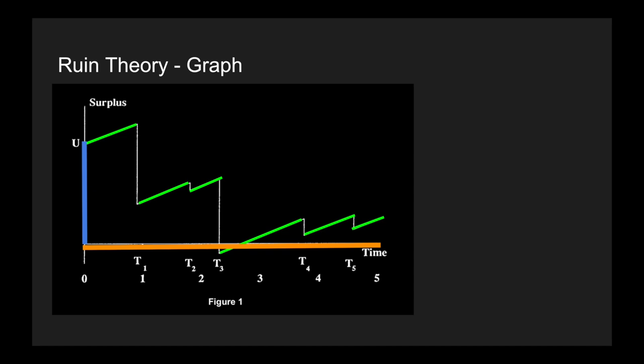However, every now and again there is a random loss amount, given by the red bars, and they decrease our capital position. If our capital position reaches zero, or some solvency line set by the regulator, then we say that ruin has occurred. In this graph we can see that at time three, which I've circled in pink, this is where ruin has occurred.